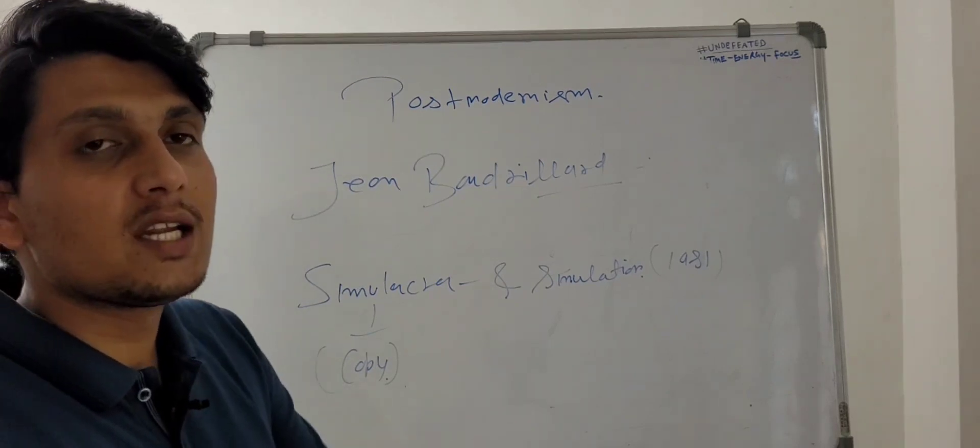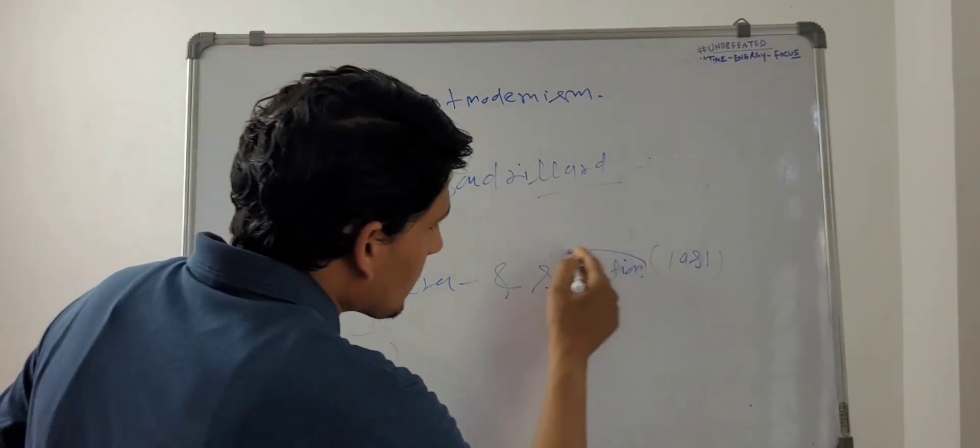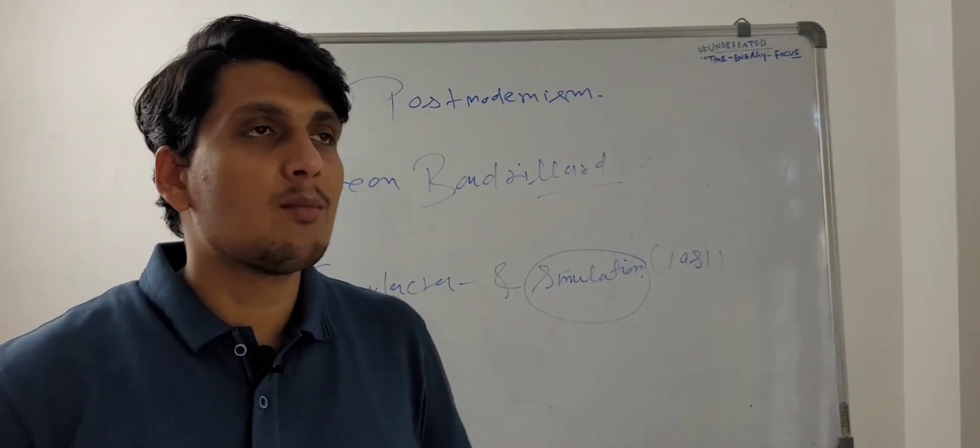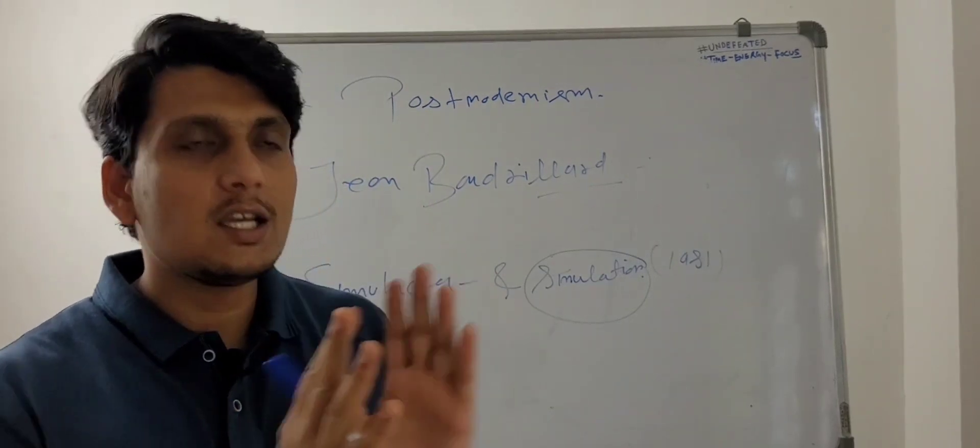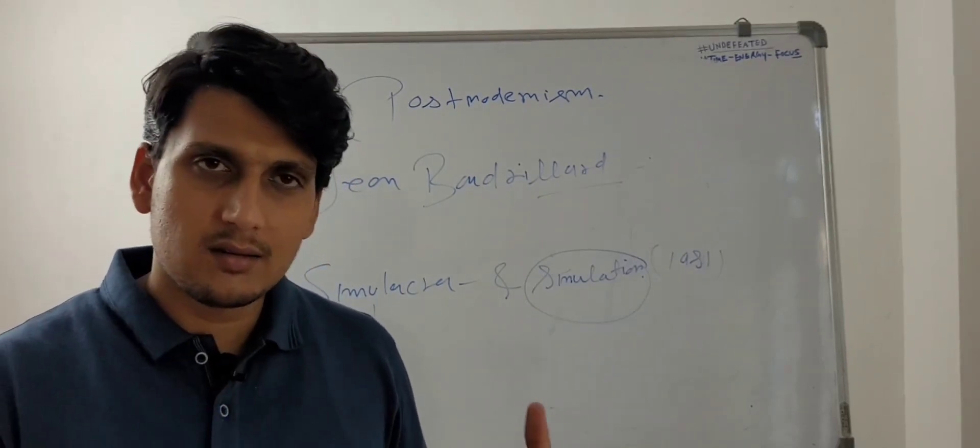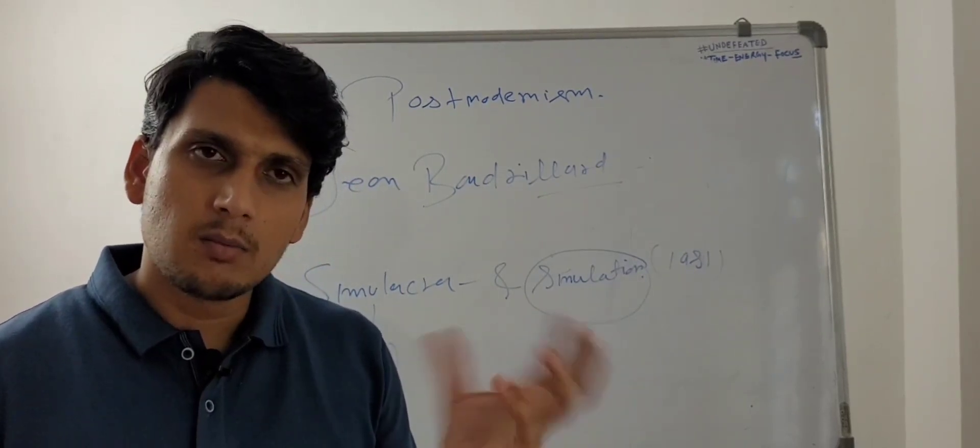Which has nothing to do with the reality. Simulation, after the first stage, simulation is when you create a model of a real object. For example, a heart model is made on which you are taught how blood flows, how blood is pumped.